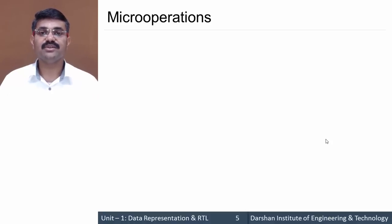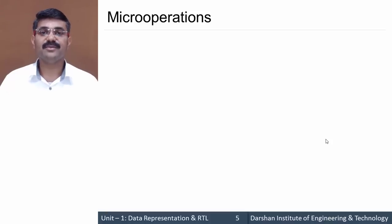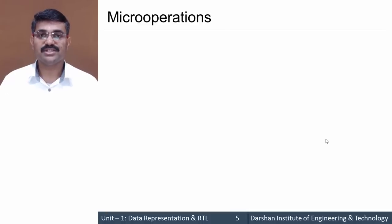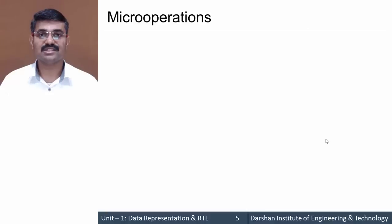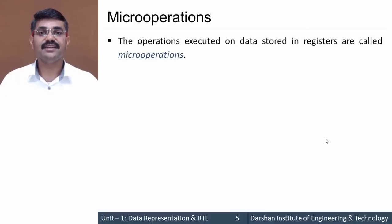To define Register Transfer Language, we first need to define micro operations. Consider a programming statement like C = A + B in C or C++. There are actually two operations here: the plus sign, which is an arithmetic operation, and the equals sign, which is an assignment operation.